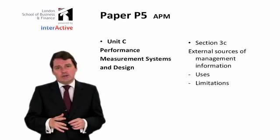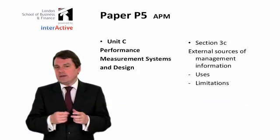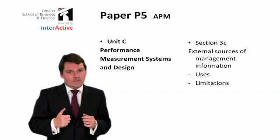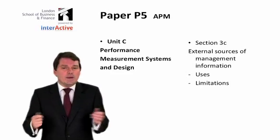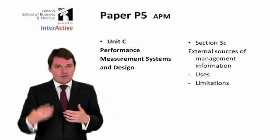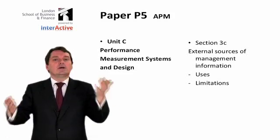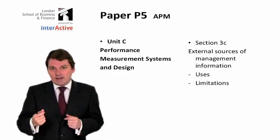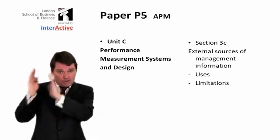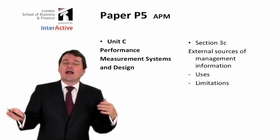In this video we are going to be looking at external information. External information is something which is very important in P5 that you don't really get in the F5 paper. In F5, most of the information comes from inside the company. When you did variances, for example, we had standard costs — where had they come from? Inside the company. The management accountant generates what they think the standard cost should be: this is how much material you should use, this is how much labor you should use. When you do your variances you compare the standard with the actual, and the actual figures also come from inside the company — from our financial accounting records. So F5 is all about inside the company.